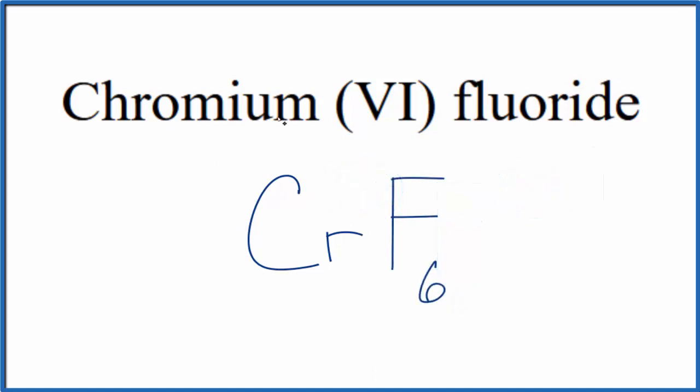So this is the formula for chromium (VI) fluoride, CrF6. If you were given this formula and asked to write the name, you'd know because the fluoride is going to be 1- and you have 6 of them, the chromium would have to be 6+, so you'd call it chromium (VI) fluoride.